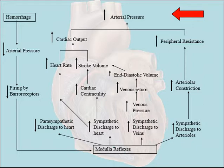So the medulla is going to say, decrease the parasympathetic discharge to the heart. What will that do? Not only increase heart rate, but you have less parasympathetic activity. Let's increase sympathetic discharge to the heart. That will increase heart rate. Let's increase sympathetic outflow to the heart muscle — positive inotropic — that's going to increase cardiac contractility.